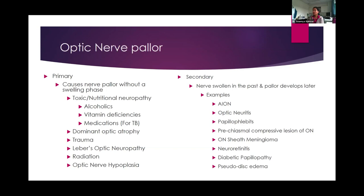Optic nerve anomalies include the optic pit — a depression on the disc located temporally — which can be associated with serous retinal detachment in the macular area. Other optic nerve anomalies include optic nerve drusen, optic nerve coloboma, and melanocytoma. I have case examples of a good majority of these optic nerve anomalies.